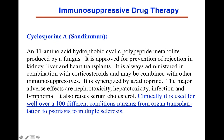The first is cyclosporine, or Sandimmune — a hydrophobic cyclic polypeptide. It's approved for prevention of rejection in kidney, liver, and heart transplants, and can be synergistically used with others. Major side effects include nephrotoxicity, hepatotoxicity, infection, lymphoma, and it also raises serum cholesterol. It's used clinically for a range of conditions from organ transplant to autoimmune diseases to suppress the immune response.